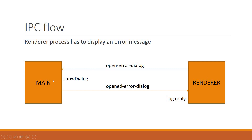The renderer process sends a message to the main process and the main process calls the native desktop API. The main process can also reply to the renderer process — it sends out an event 'opened error dialog' back, and in the renderer process we listen to that event, capture the arguments, and perform any operation. In our simple example, we're just going to log the reply from the main process.